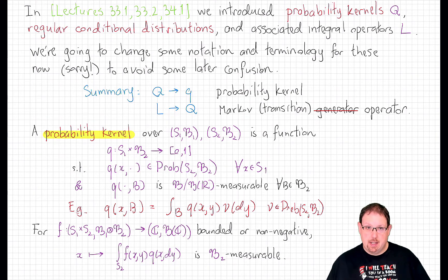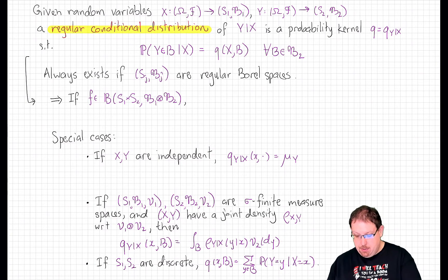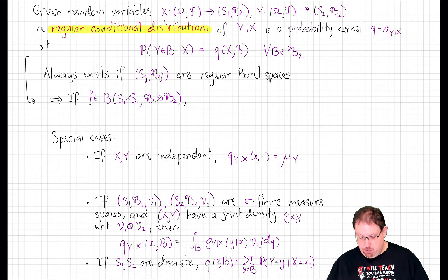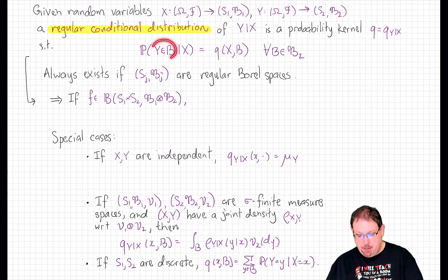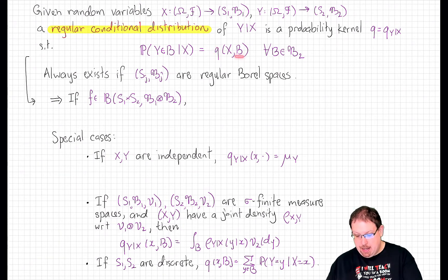Probability kernels give us a general way to talk about conditional distributions of random variables with respect to other random variables. If we have two random variables X and Y on the same measurable space taking values in two state spaces, then a regular conditional distribution of Y given X is a probability kernel, denoted q of Y given X, with the property that if I take the conditional probability of the event that Y is in B given X — which is a random variable — I can compute that random variable by taking the probability kernel q at B and evaluating it at the random point X.